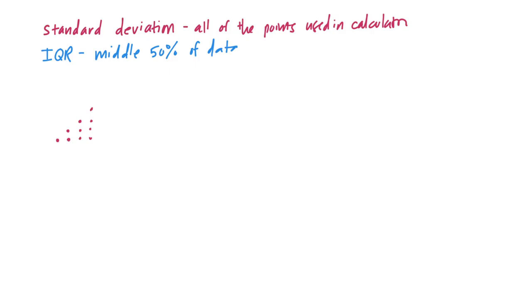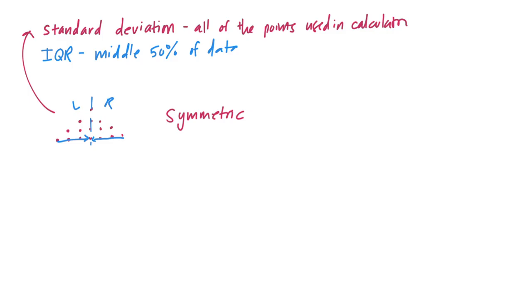The ways that we would use these — when I have a symmetric data set, so that's something that looks like this, I would use the standard deviation. Because the distance to the middle is always pretty predictable, and if I use all of the points in this calculation, I'm going to get a really good sense of how spread out the data is from the middle. So I use standard deviation when I've got a symmetric data set, when I can cut the middle in half and the left side is a mirror image of the right-hand side, or close to it.